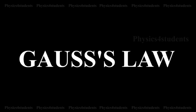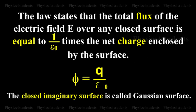Gauss Law. The law states that the total flux of the electric field E over any closed surface is equal to 1 by epsilon 0 times the net charge enclosed by the surface. Phi equals Q by epsilon 0. This closed imaginary surface is called Gaussian surface.